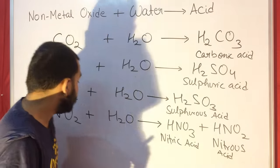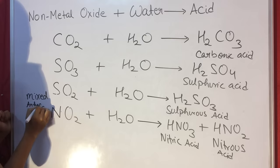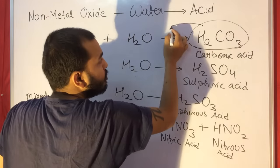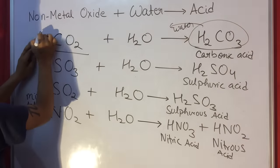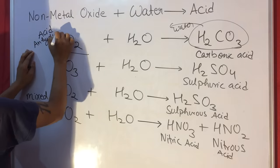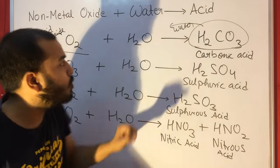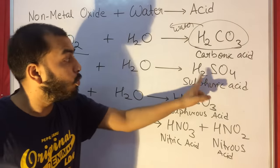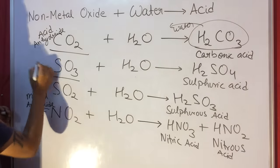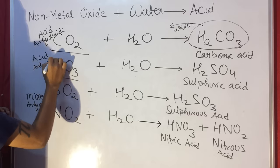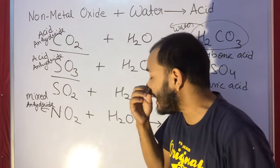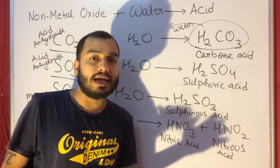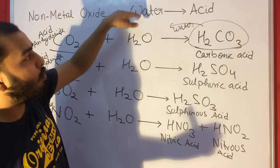Anhydride means 'without water' — when we remove water from an acid, we get the acid anhydride. From carbonic acid, remove H2O and we get CO2, which is the acid anhydride of carbonic acid. Remove water from sulfuric acid and we get SO3, the acid anhydride of sulfuric acid. NO2 is a mixed anhydride because it can form both nitric acid and nitrous acid.